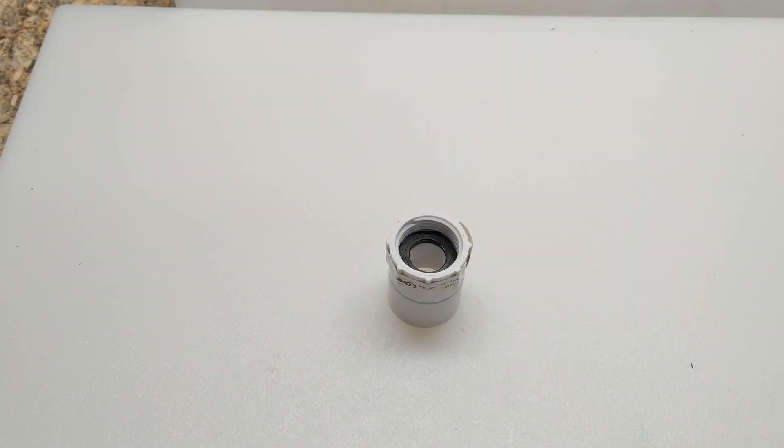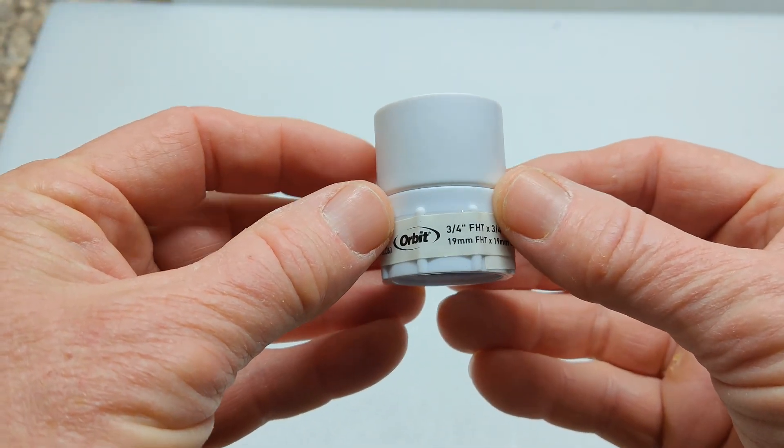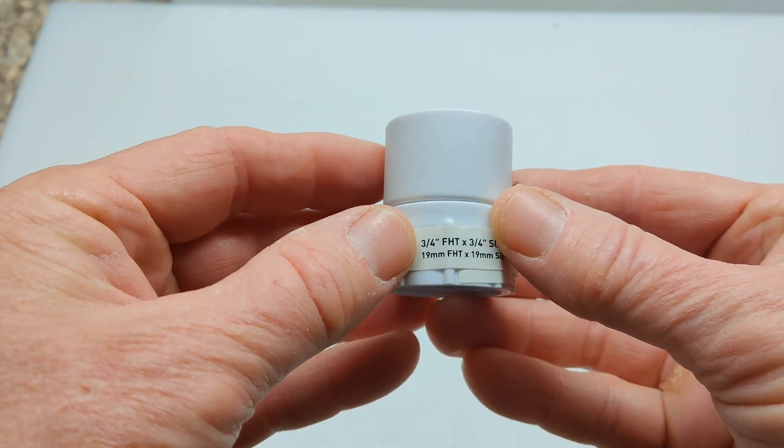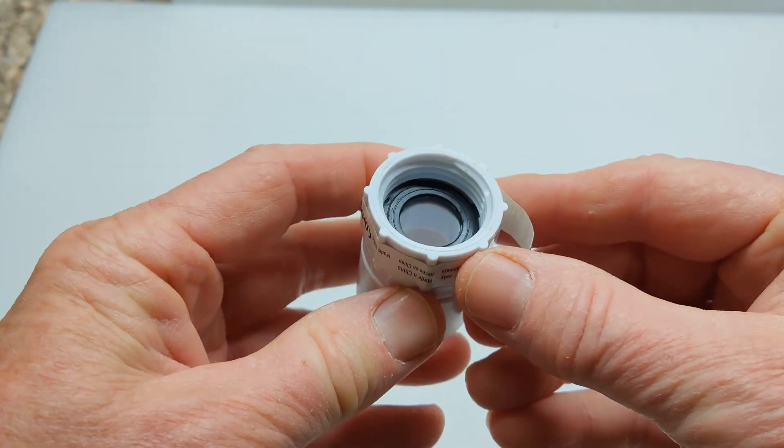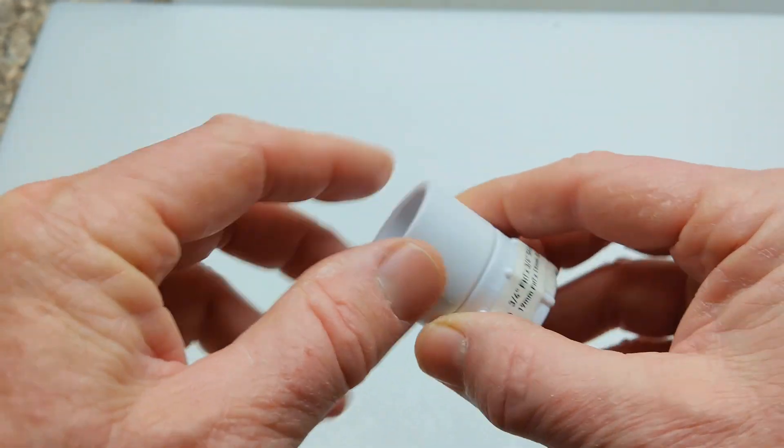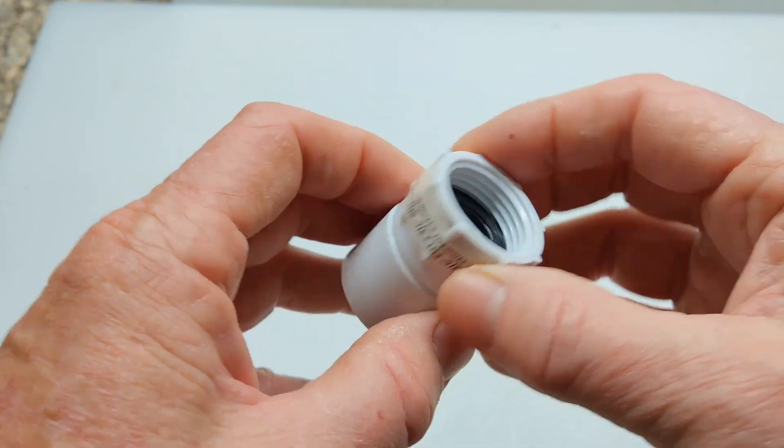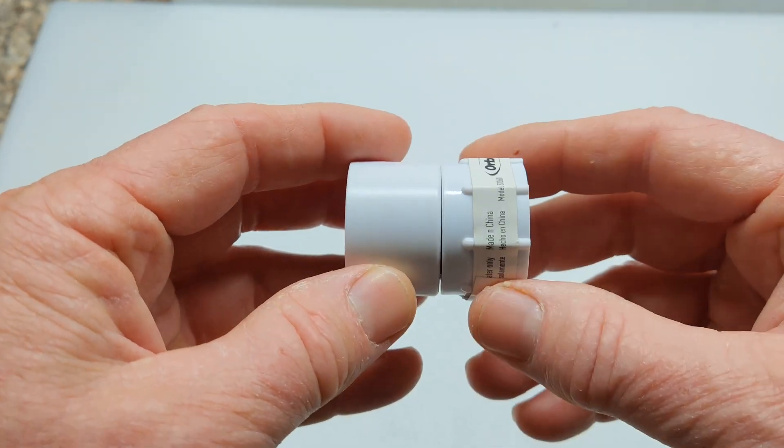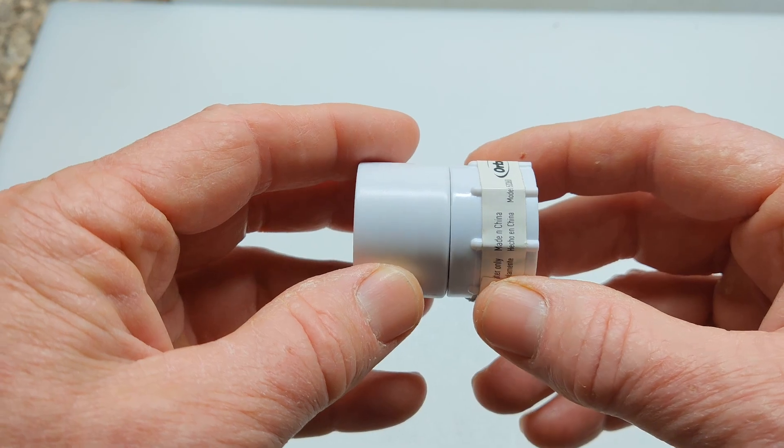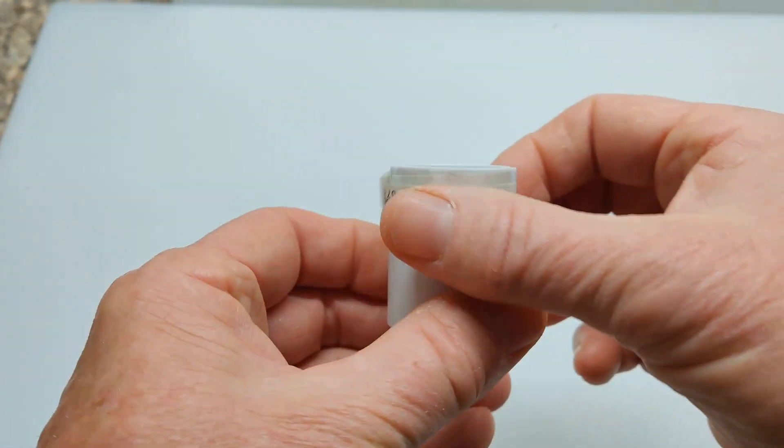This is the main part I'm going to be using in this project. This is made by Orbit, which is for landscaping or lawn care. It's a 3¼ inch threaded section here by 3¼ inch slip-in section here. This is actually used to attach hoses, so you know it's going to be watertight and made for an outdoor environment. This is what I'm going to use that's going to make a swivel, just like this, and that's what it's for.